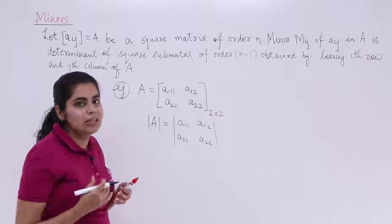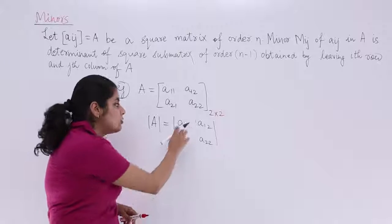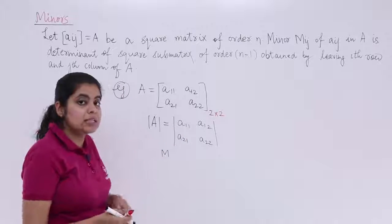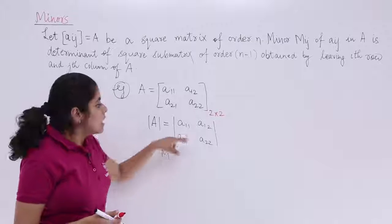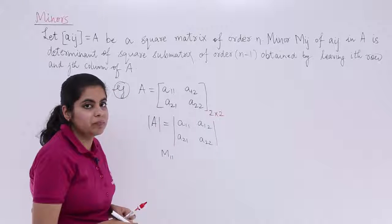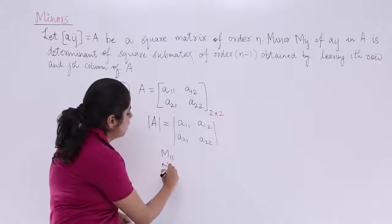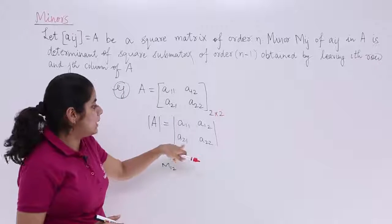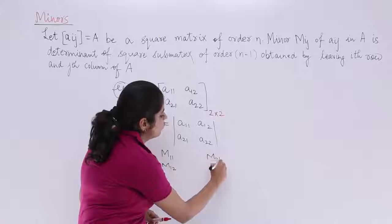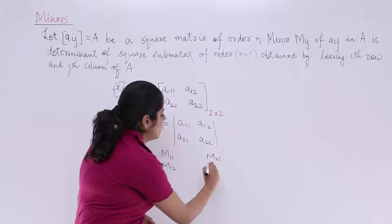You have to follow one simple thing that if you have to calculate minor of the first element, you have to first of all write it as capital M. This is the notation for a minor. Minor of A11 will be M11. Minor of A12 will be M12. Minor of A21 will be M21. And minor of A22 will be M22.